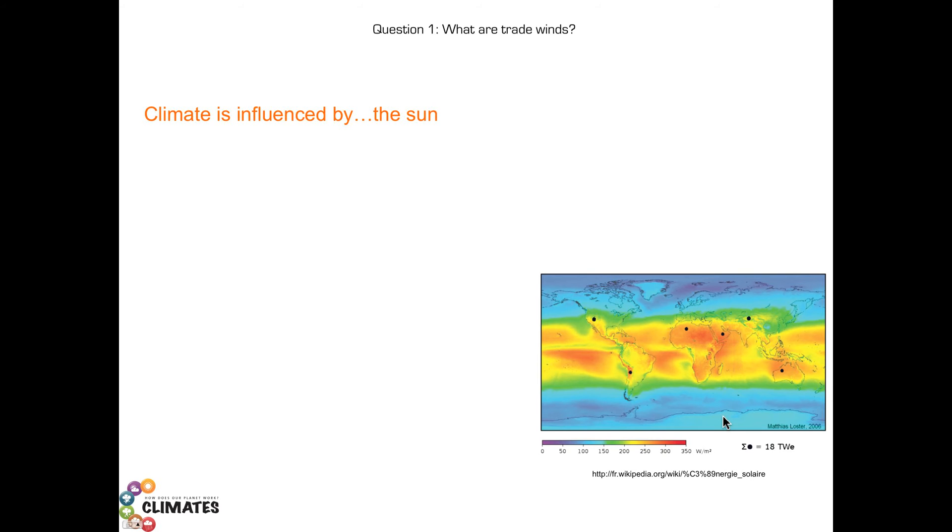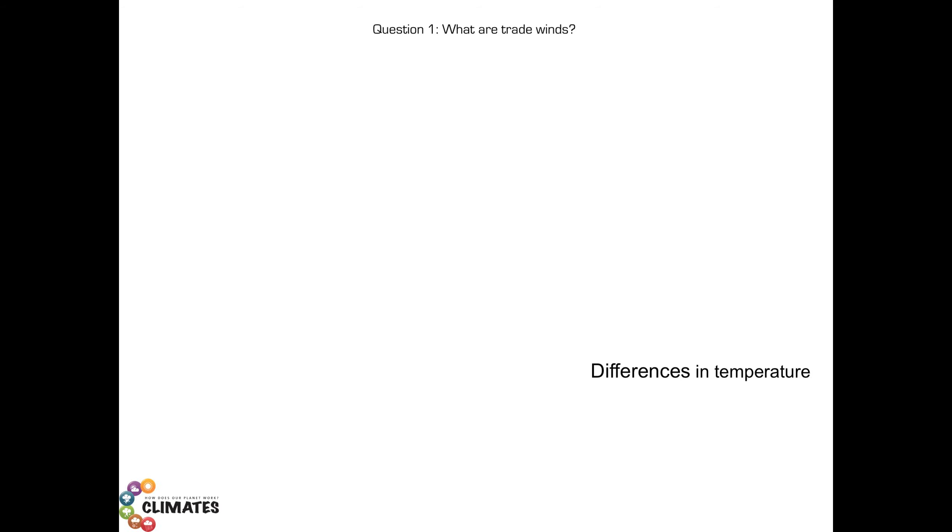The climate is thus influenced by the amount of solar energy received at the surface of the Earth. This energy will be unequally absorbed, oceans and continents warm up differently. Differences in temperature from one region to another lead to the existence of atmospheric circulation, air movements, meaning winds. Some winds are vertical, ascend in altitude or descend to the ground. Others are horizontal, parallel to the surface.